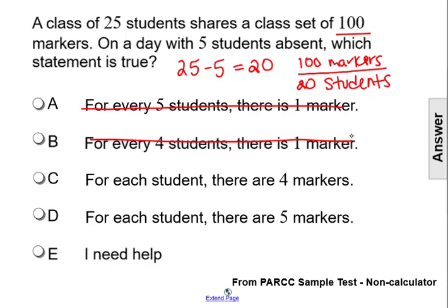5 students don't have to share a marker because there's more markers than there are students. So, if we take the unit rate and divide the numerator and denominator by 20,